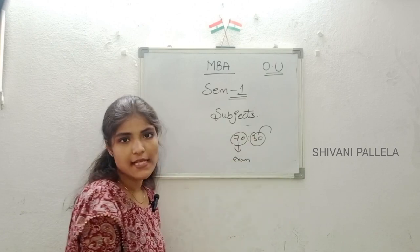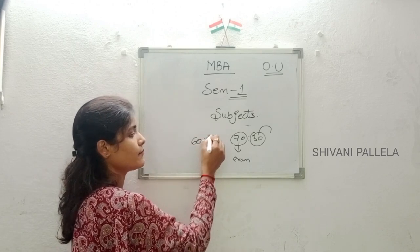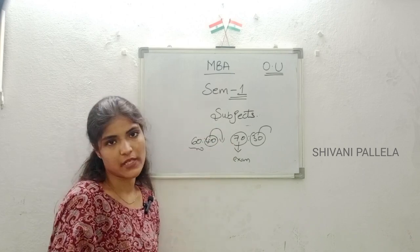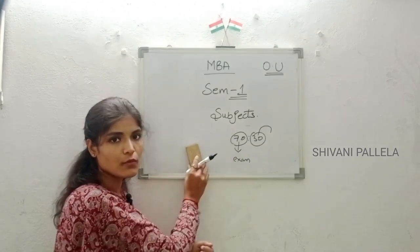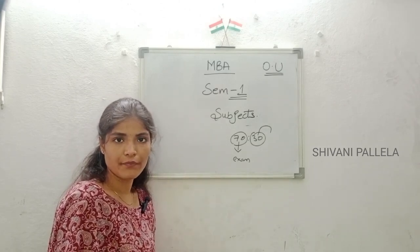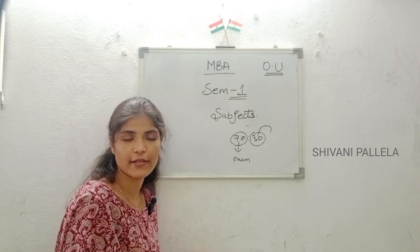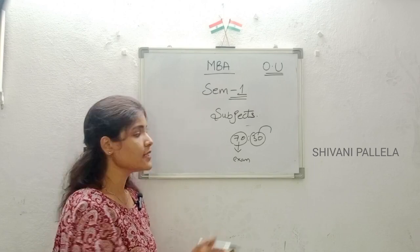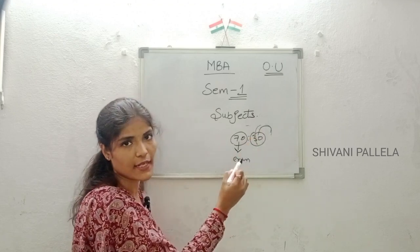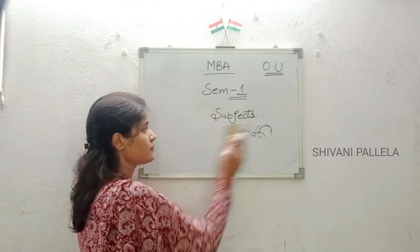This year there are chances to get a 60 to 40 pattern, meaning 40 marks will be provided by your respected colleges and you need to attempt only a 60-mark paper at your exam center. But this has not yet been announced officially, and we can expect that announcement in upcoming days. At present, 70 marks you need to attempt at the examination center, and 30 marks will be given by your college faculties by conducting record writing, seminars, projects, etc.